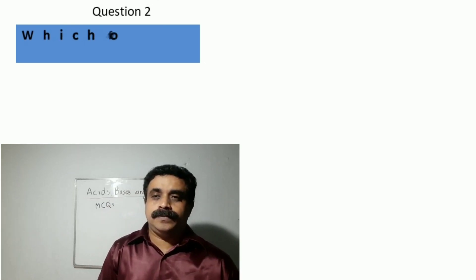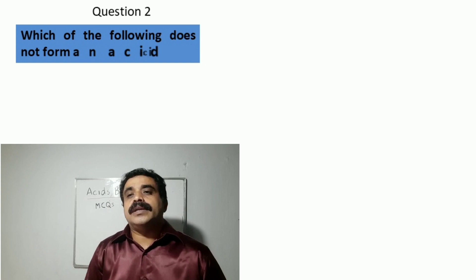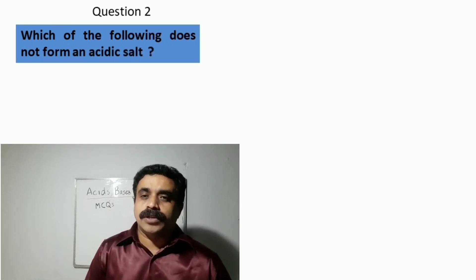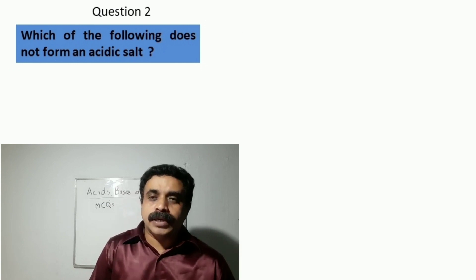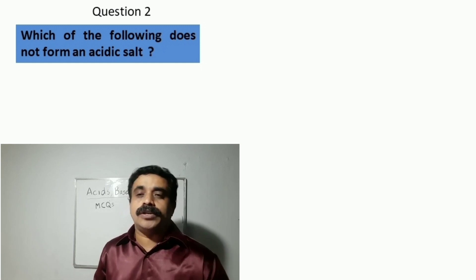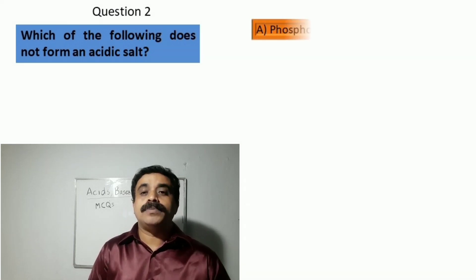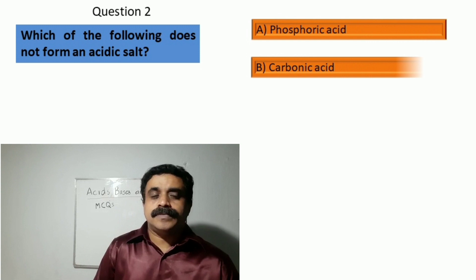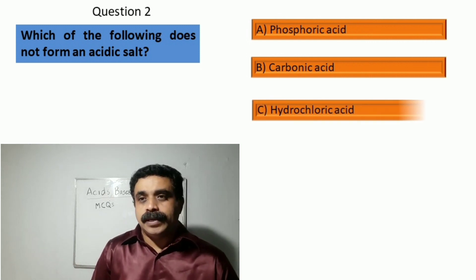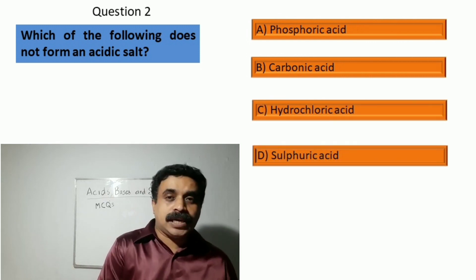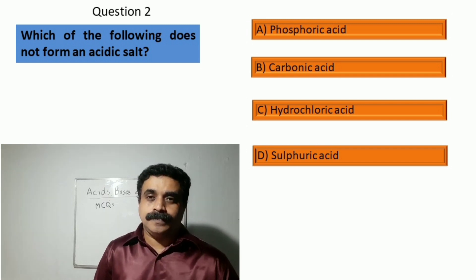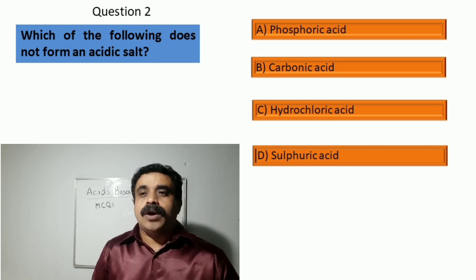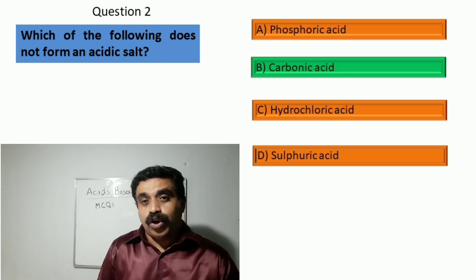Question number two: which of the following does not form an acidic salt? Option A: phosphoric acid, option B: carbonic acid, option C: hydrochloric acid, and option D: sulfuric acid. The answer is option B, carbonic acid.